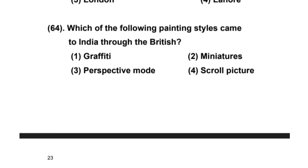Which of the following painting styles came to India through the British? Options: 1) Graffiti, 2) Miniatures, 3) Perspective mode, 4) Scroll picture. The right answer is option 3 — Perspective mode.